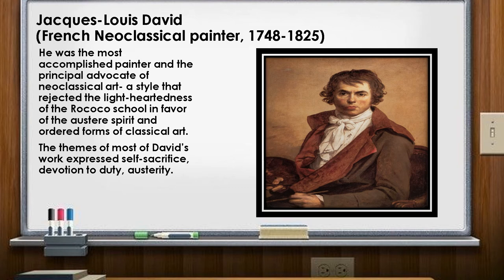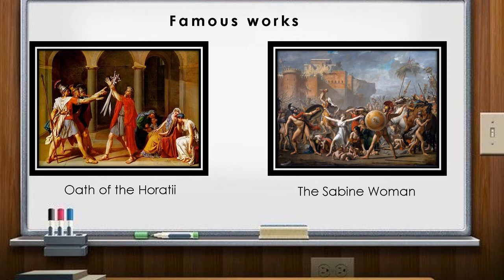The first artist we need to talk about is Jacques-Louis David, a French Neoclassical painter (1748–1825). He was the most accomplished painter and the principal advocate of Neoclassic Art, who rejected the lightheartedness of the Rococo school in favor of the austere spirit and other forms of classical art. The themes of most of David's work expressed self-sacrifice, devotion to duty, and austerity.